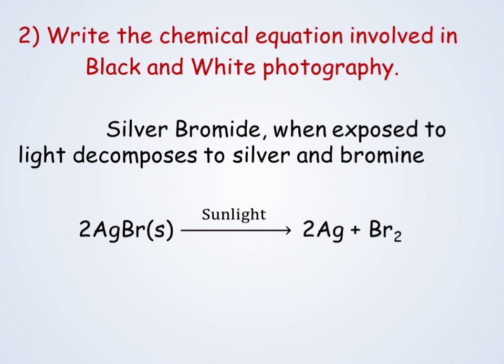Write a chemical equation involved in black and white photography. When silver bromide is exposed to sunlight, it decomposes to give silver and bromine. The chemical equation: 2AgBr, when exposed to sunlight, gives 2Ag plus Br₂. That is silver and bromine, which is used in black and white photography.